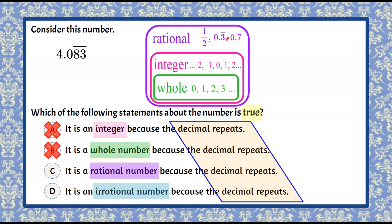0.3 repeating, so any repeating decimal or terminating decimal is rational. So we know that we have irrational then to compare it to.